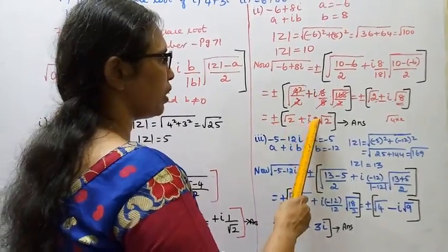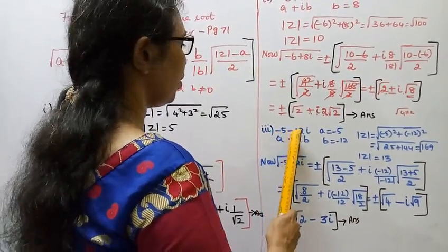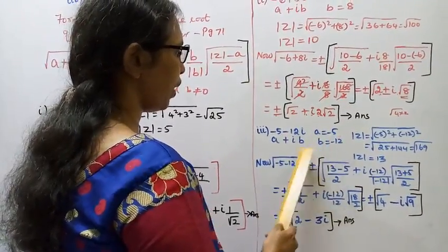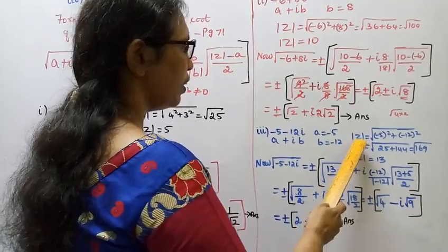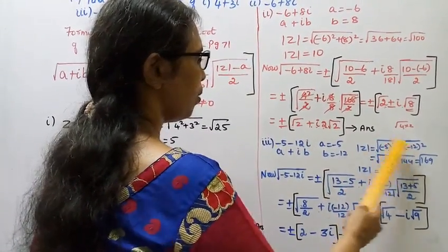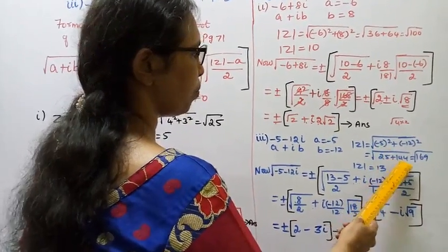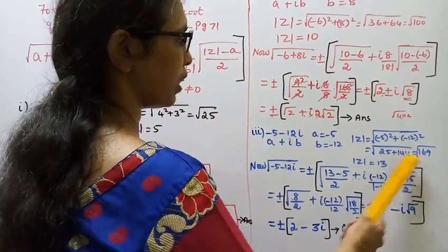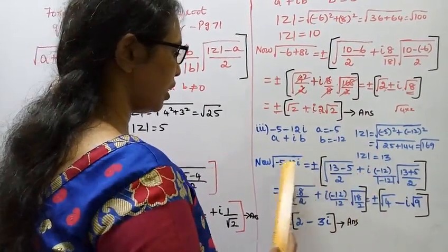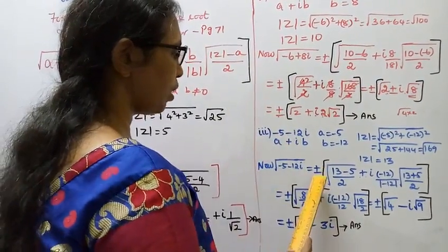Third subdivision: minus 5 minus 12i. So a equals minus 5, b equals minus 12. Mod z equals root of (minus 5 squared plus minus 12 squared), equal to root of (25 plus 144), equal to root of 169. Mod z equals 13.